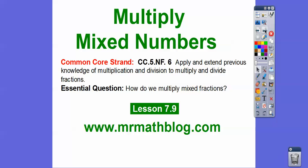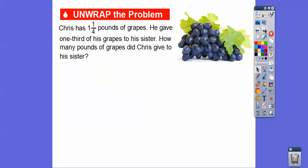Here's our common core strand for our teachers. Our essential question is: how do we multiply mixed numbers? We're going to show one with a model and then show you a nice little shortcut. Here's the problem: Chris has one and one-fourth pounds of grapes. He gave one-third of his grapes to his sister. How many pounds of grapes did Chris give to his sister?